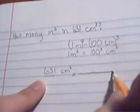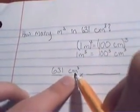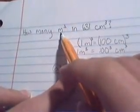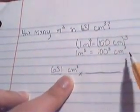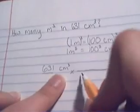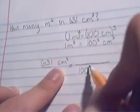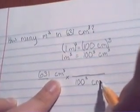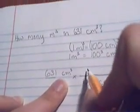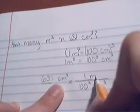Times we use our conversion factor. Remember you want to cancel out centimeters cubed and move into meters cubed. So you want to put these centimeters cubed on the bottom. So 100 cubed centimeters cubed over one meter cubed.